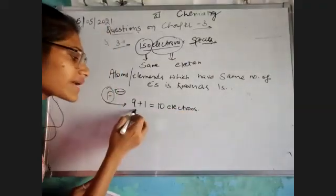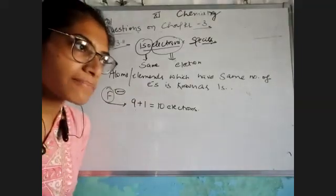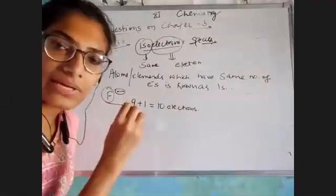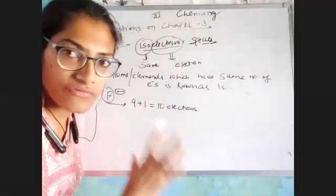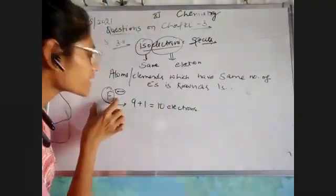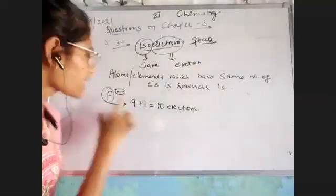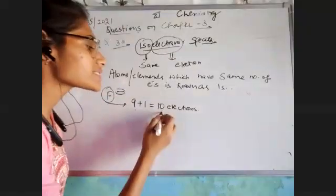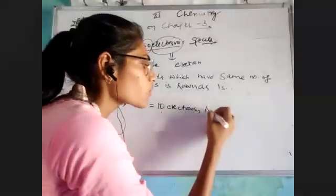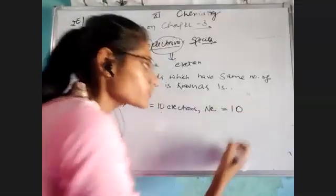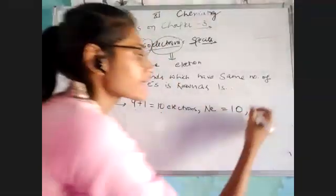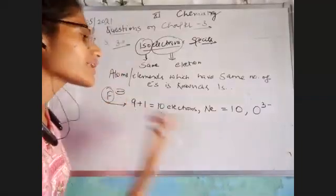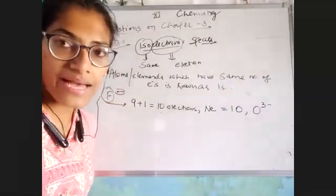Fluorine's atomic number is 9. Since it has one negative charge, it means it has one extra electron, giving F⁻ a total of 10 electrons. Similarly, neon also has 10 electrons because its atomic number is 10. Or we can say O³⁻, because oxygen has 7 electrons and gains 3, making 10. These are simply isoelectronic species.